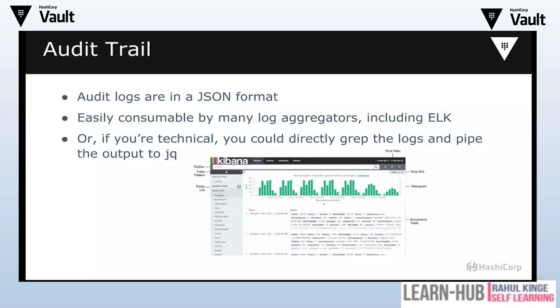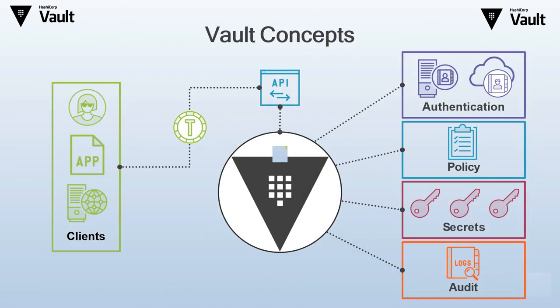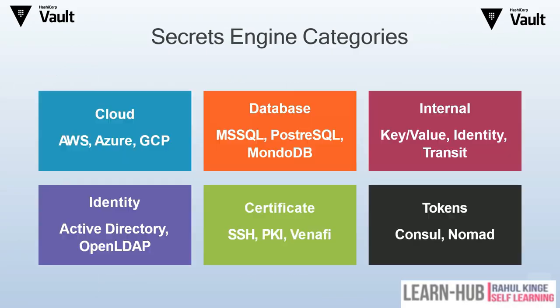Whenever a client needs a credential, they communicate with the Vault — it could be via API, UI, or CLI, and all three methods are supported. Authentication, policy, secrets, and auditing are the main components of Vault. We will discuss these in later sessions. Authentication and secret engines are the two main categories.